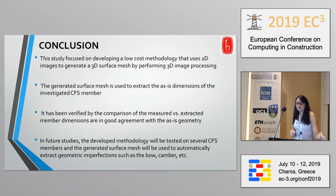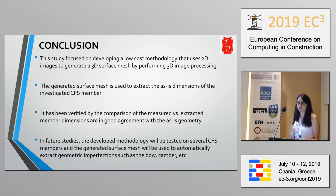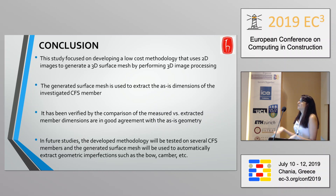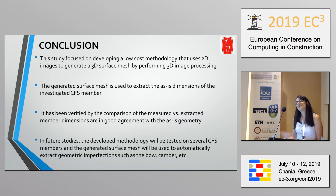In conclusion, we developed a low cost methodology that uses 2D images to generate a 3D surface mesh by performing 3D image processing. We used the generated mesh to extract the as-is dimensions of the CFS member and verified by comparing measured versus extracted dimensions that our mesh is in good agreement with the actual geometry. In subsequent work, we extracted geometric imperfections such as bow, camber, and cross-sectional anomalies, introduced them into the model to get the actual behavior, and performed experimental setups including column push tests and beam tests.